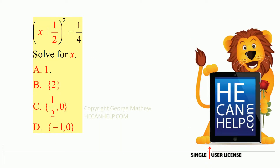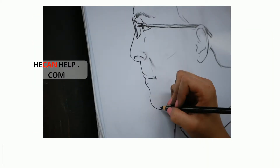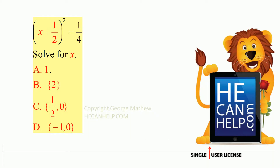x plus one-half, the whole squared, is equal to one-quarter. Solve for x. So, (x + 1/2)² = 1/4 — take the square root on both sides.